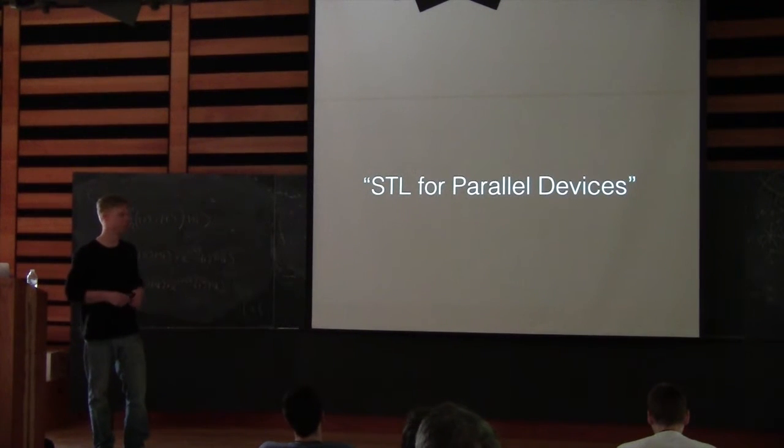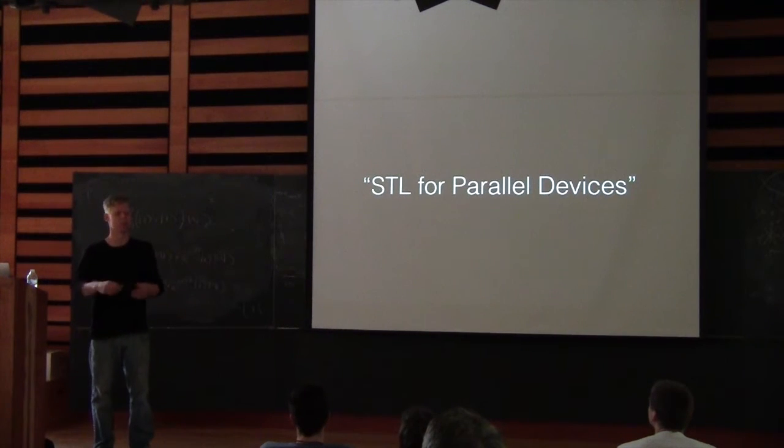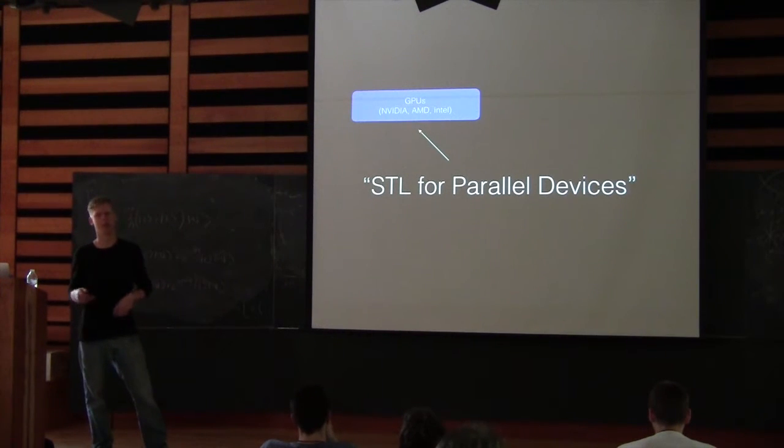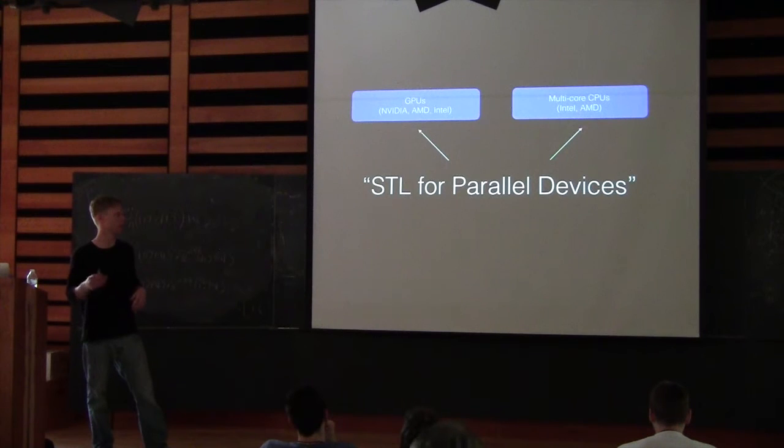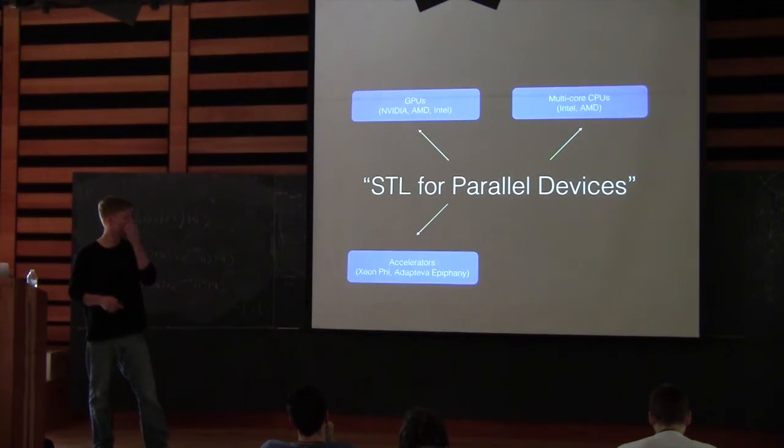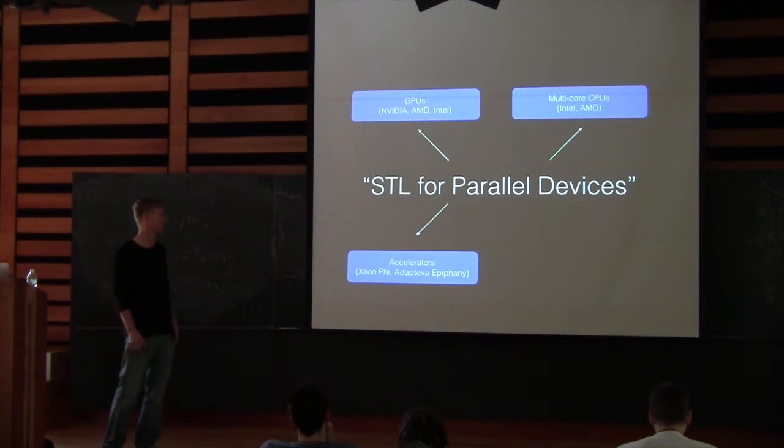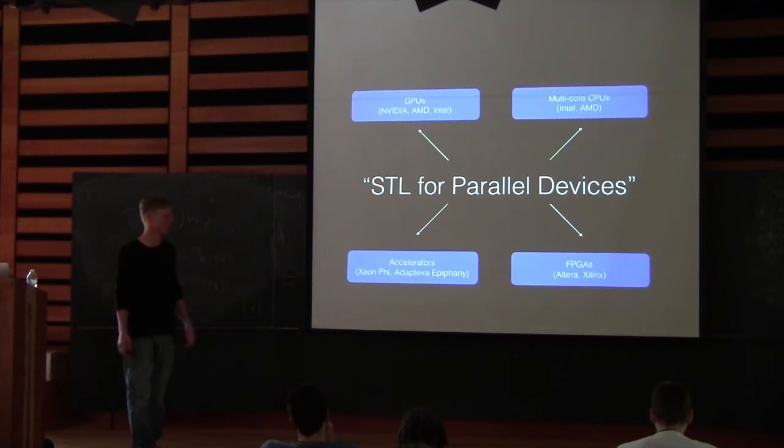The aim is to be an implementation of the STL for parallel devices. Parallel devices include GPUs like those from Nvidia, AMD, Intel, and multi-core CPUs. It also includes more exotic accelerators like the Intel Xeon Phi or the Adaptiva Epiphany, and even FPGAs like those from Altera or Xilinx.